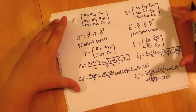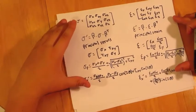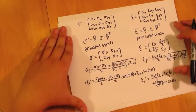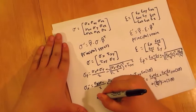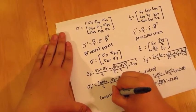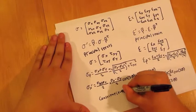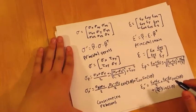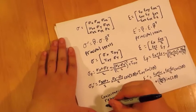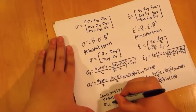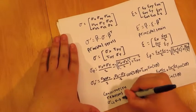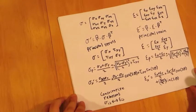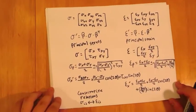We know all these things about stress, and all the things about strain are basically the same. These relationships are called constitutive relations — they relate stress and strain. These are some of the main equations we'll be using when talking about strain gauge rosettes.